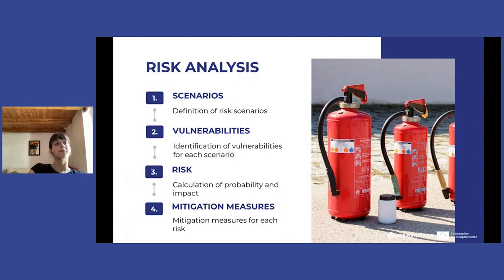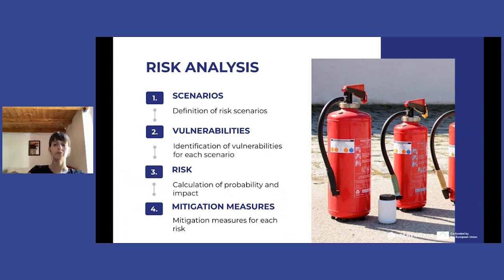The risk can then be calculated as follows: for each combination of scenario, threat, and area, the risk will be equal to the product of the level of probability of occurrence of each threat and its level of impact on the collection. Furthermore, for each combination of threat, scenario, and area, it is necessary to establish the mitigation measures to protect the assets from that risk, differentiating between those already active and those that should be implemented as soon as possible.